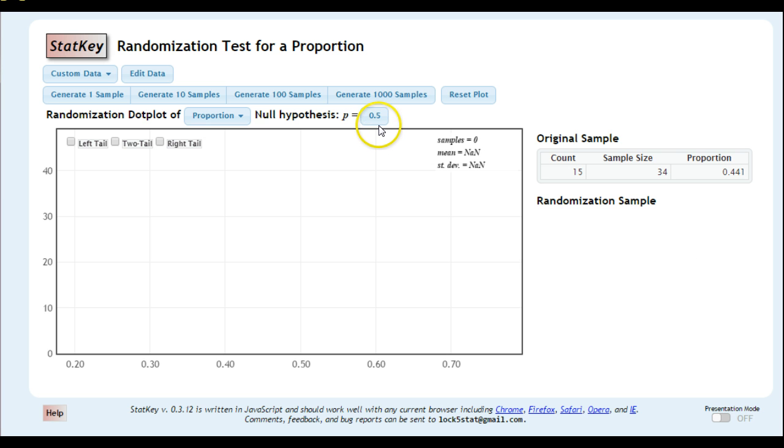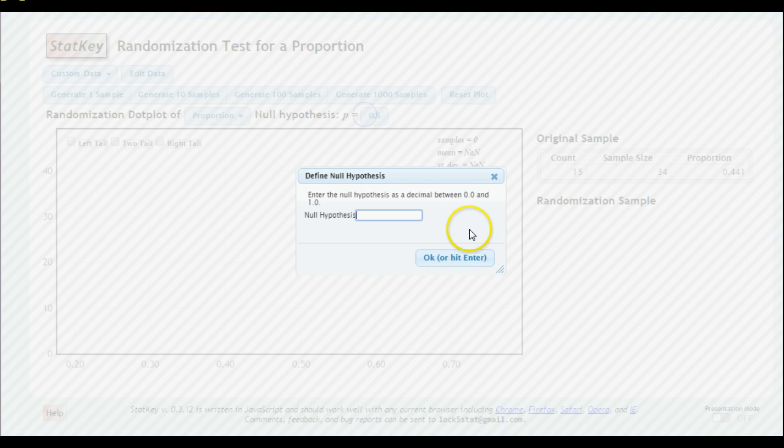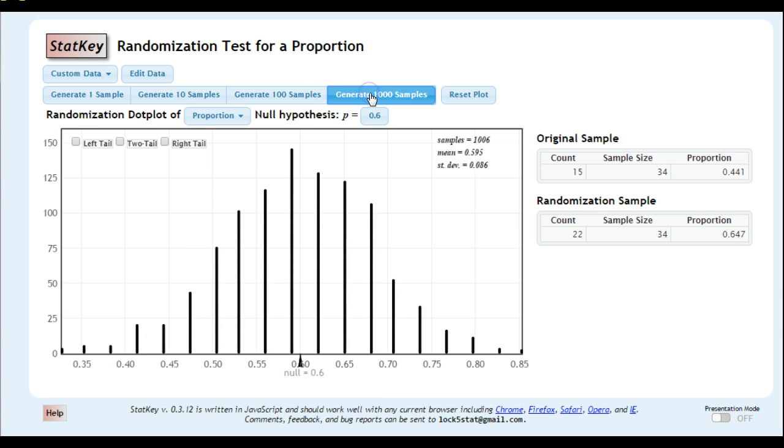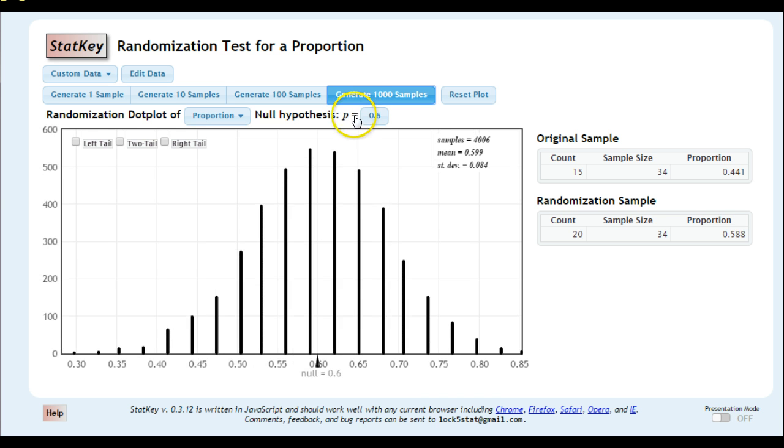Second thing we do, which is an additional step from the confidence interval, is we need to set our null hypothesis. We said that P is equal to 0.6 before, so we type that in here. And that's going to recenter our curve around that null. Now if we generate one at a time, you're going to see each random sample is a little bit different. They tend to clump around the null hypothesis. We generate a few thousand of these, we get our large curve again centered around that null.